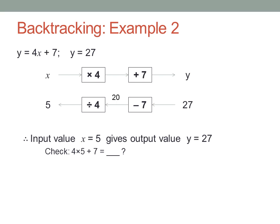Let's check that answer by substituting it into the original rule again. Four times five is twenty, plus seven is twenty-seven. Good.